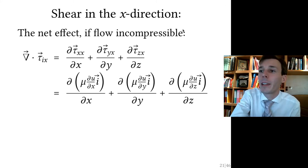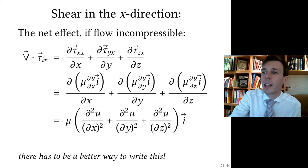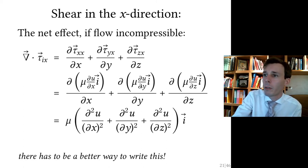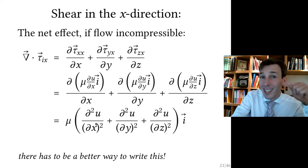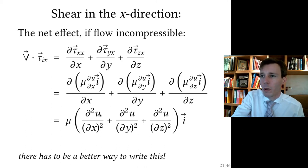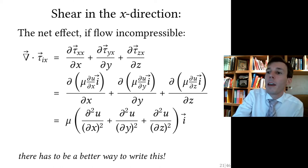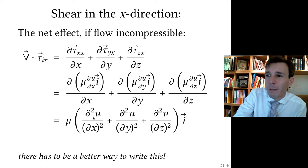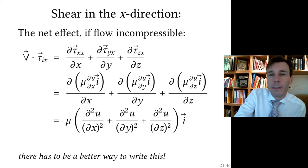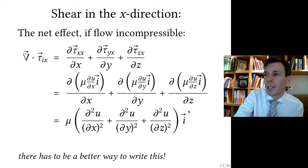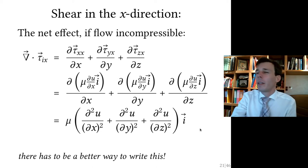Rewriting this, we can group the viscosity out of all three derivatives. Each time we take the second derivative of a velocity component with respect to space. The net effect of shear in the X direction is viscosity times the second spatial derivative of the X-component of velocity.